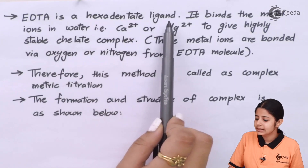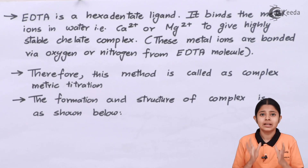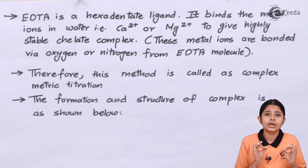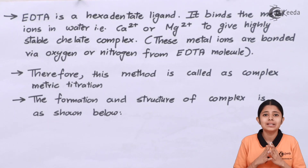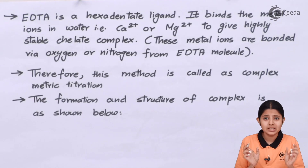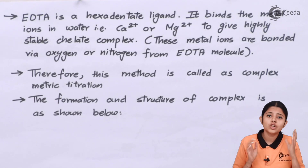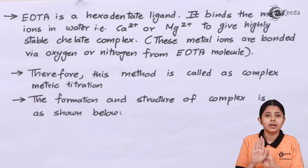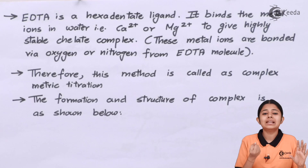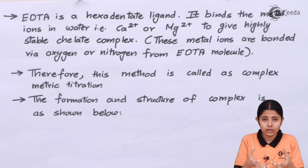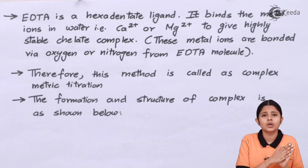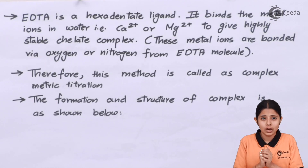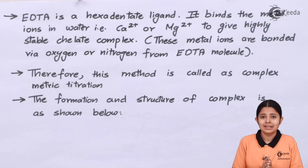EDTA is a hexadentate ligand. A ligand is a structure or chemical formula which donates electrons and will always form a coordinate bond. A coordinate bond is the sharing of electrons between two atoms of different elements, where the electrons are shared by only one of them — generally a metal. That means if I have a metal ion or metal atom with some other atom, this other atom we name as the ligand, which will be electron deficient.